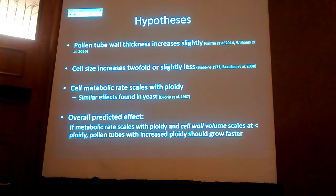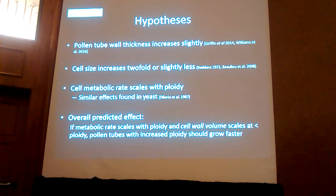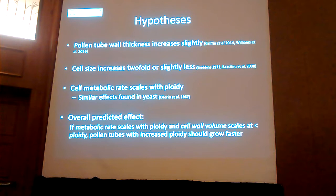The hypothesis I have for each of those parameters is that pollen tube wall thickness increases slightly in polyploids. There's very little literature on how cell wall content is covered by polyploidy, but there's a little bit about fibers in wood between diploids and polyploids, and there's a significant but slight increase in polyploids, so I'm basing my hypothesis on that. Cell size in polyploids tends to increase about two-fold or slightly less. Metabolic rate tends to scale sublinearly. Overall, I predict that metabolic rate is going to scale sublinearly, and the cell wall volume will be less than proportional, so polyploid pollen tube growth rate should be slower.